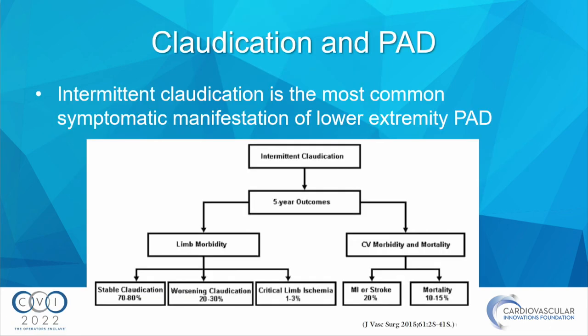Intermittent claudication is the most common symptomatic manifestation of lower extremity PAD. Of people who have claudication, most over the next five years remain with claudication. A very small number progress to limb-threatening ischemia, but many have other manifestations of atherosclerotic cardiovascular disease, including death. Medical management is therefore a big part of managing patients with PAD.